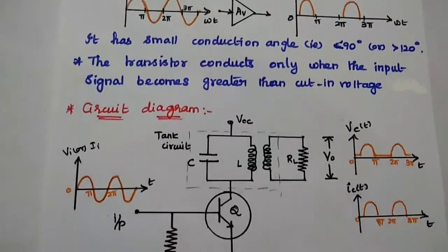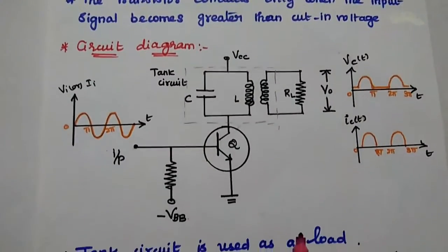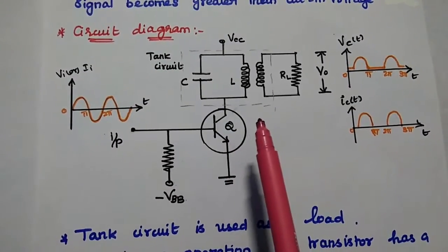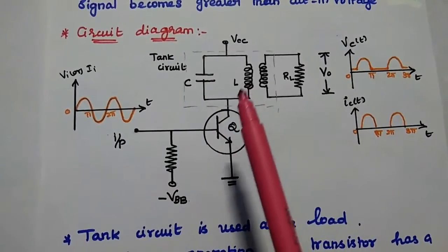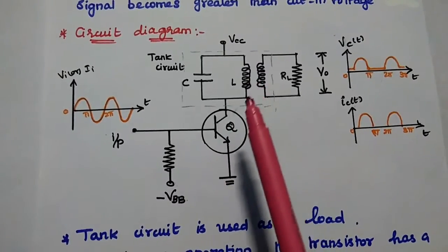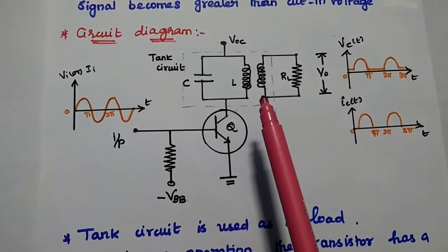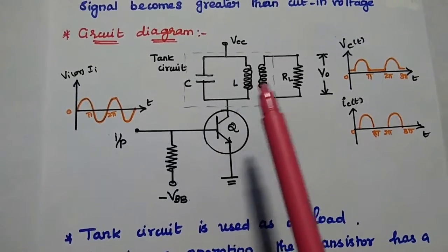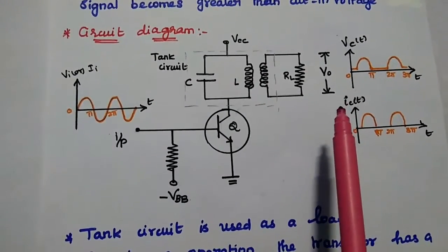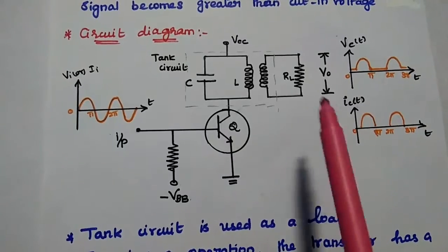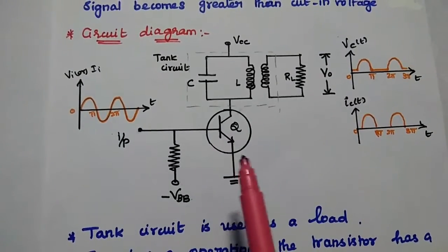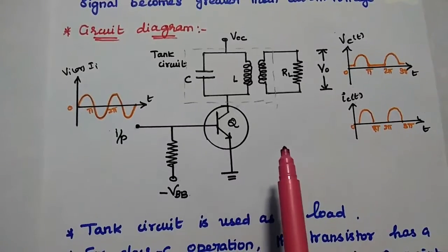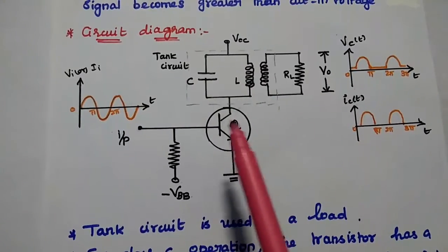Next we can discuss the circuit diagram and its operation. In this class C amplifier, we are going to use a tank circuit. This tank circuit is nothing but a tuned circuit. We can connect the collector output to this tank circuit to get the desired output. So class C amplifier is also called a tuned amplifier since a tank circuit is used.